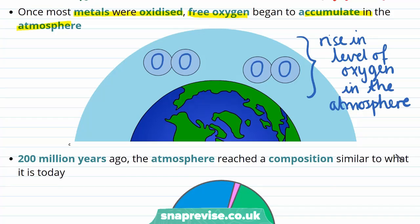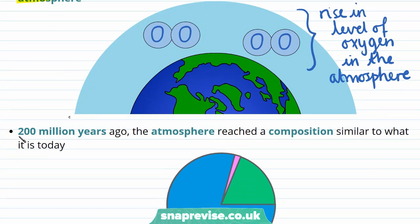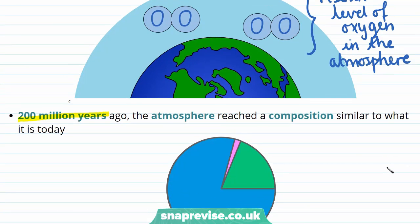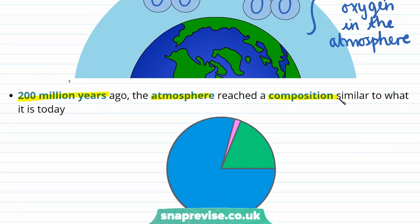All the processes we've been discussing took place over millions of years, and the Earth is 4.54 billion years old — so 200 million years is a relatively short time span in the lifetime of the Earth. At this point, 200 million years ago, the atmosphere reached a composition similar to what we see today: 78% nitrogen, 21% oxygen, and less than 0.1% of any other gases.